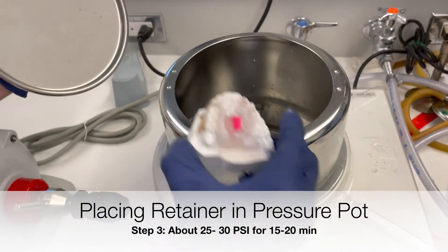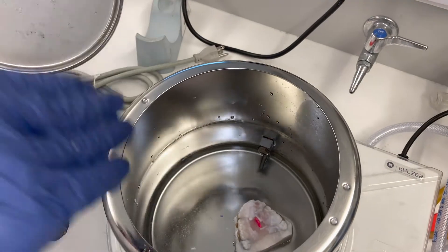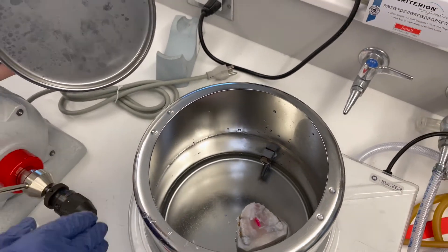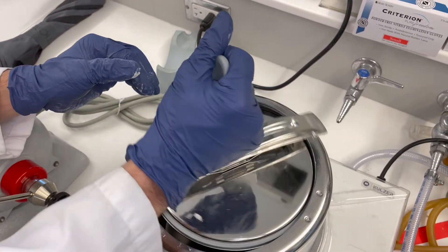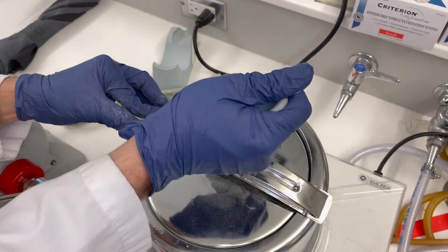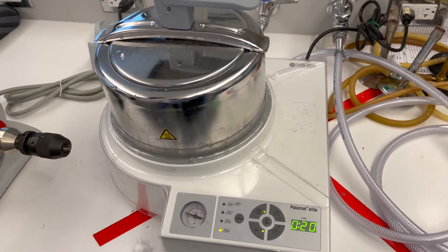After we have added the acrylic, we want to now place it in a pressure pot. A heated pressure pot will give you the best curing for a retainer. We want to make sure we place in the pressure pot about 25 pounds of pressure for 20 minutes. It doesn't need 20 minutes, but it will not hurt to make sure it has cured fully.